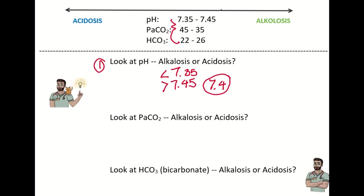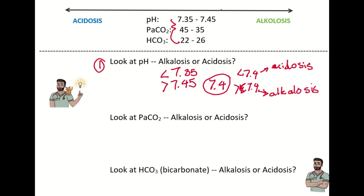If the pH is normal at 7.4, it's not going to be a significant finding on its own. However, if the pH is less than 7.4 — even within normal range — that still leans toward acidosis, and greater than 7.4 leans toward alkalosis. You'll get questions with a normal pH, so identifying which side of 7.4 the value falls on is still important.